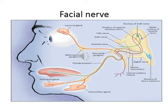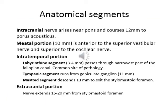The seventh cranial nerve is the facial nerve. Its nucleus originates from the pons. During its course, the facial nerve has an intracranial segment, then the meatal portion, the intratympanic portion — including the labyrinthine segment, tympanic segment, and mastoid segment — and then the extracranial portion of the nerve extending from the stylomastoid foramen.